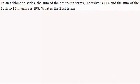Hi there. Now in this question we're given that in an arithmetic series the sum of the fifth to eighth terms inclusive is 114 and the sum of the 12th to 15th terms is 198. And we're asked what is the 21st term?